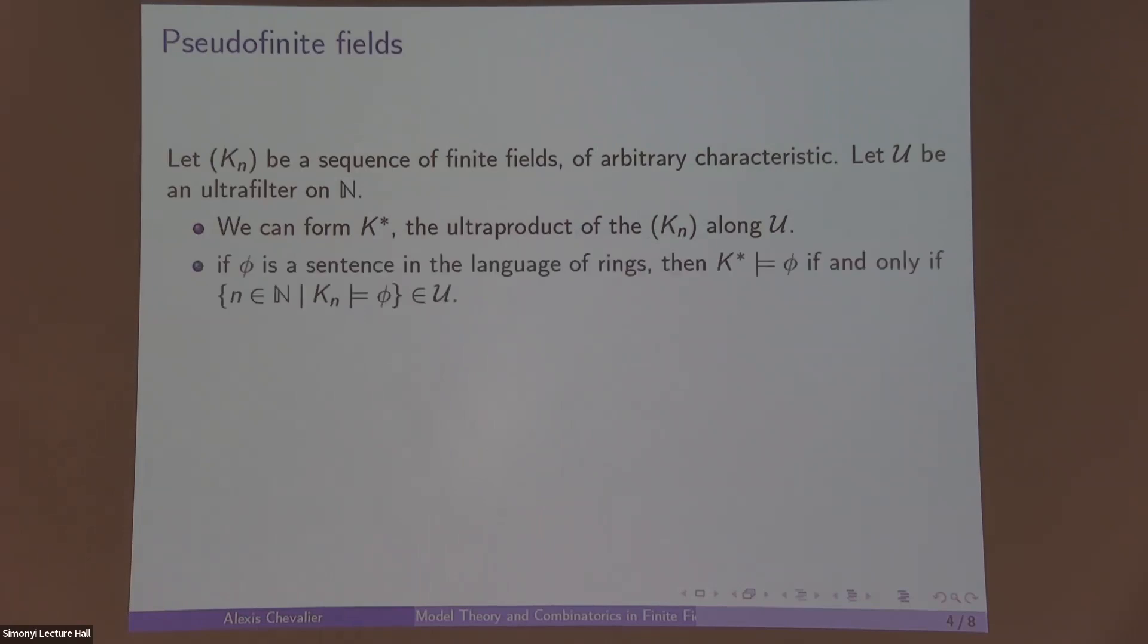K* has the property that if φ is any sentence in the language of rings, then K* satisfies φ if and only if the set of n such that K_n satisfies φ is in our ultrafilter. So this means that K* only sees asymptotic first-order properties of the K_n.